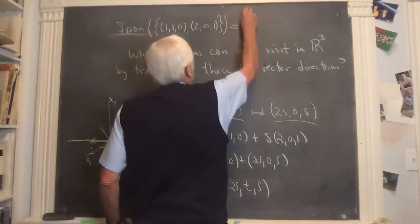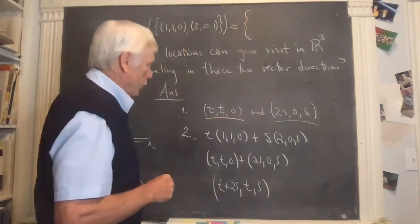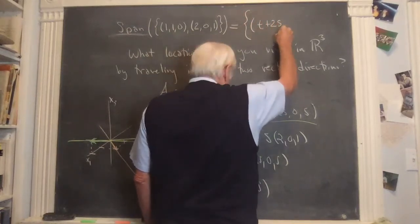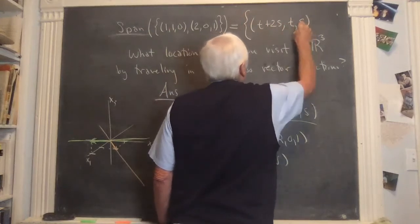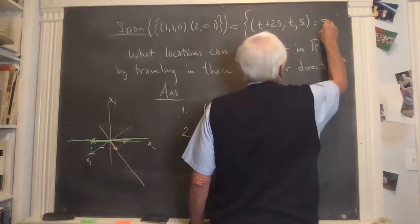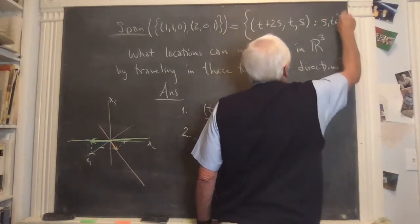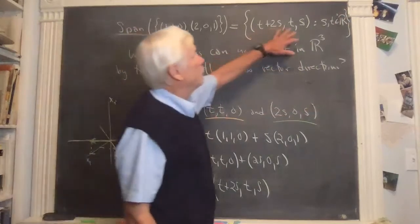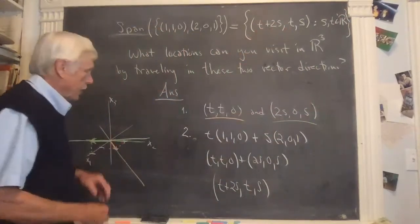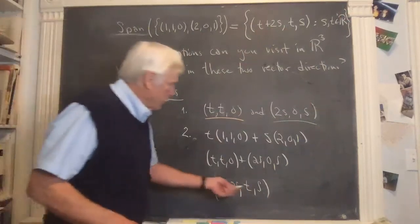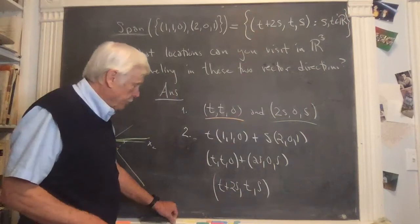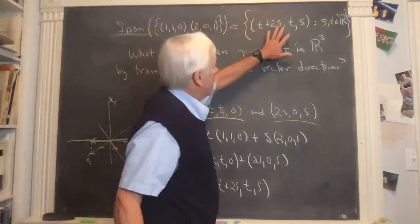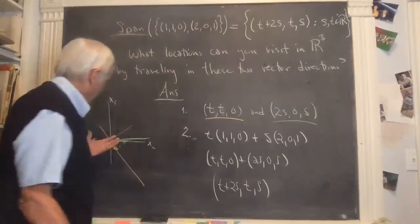So these are the points forming the span of these two vectors: all points of the form {t+2s, t, s} where s and t are free variables. They represent the distances — the amounts of each vector you use. Even if they're both zero, that's fine — it means you don't go anywhere, so the origin is included. With two free variables, this is a plane in three-dimensional space.